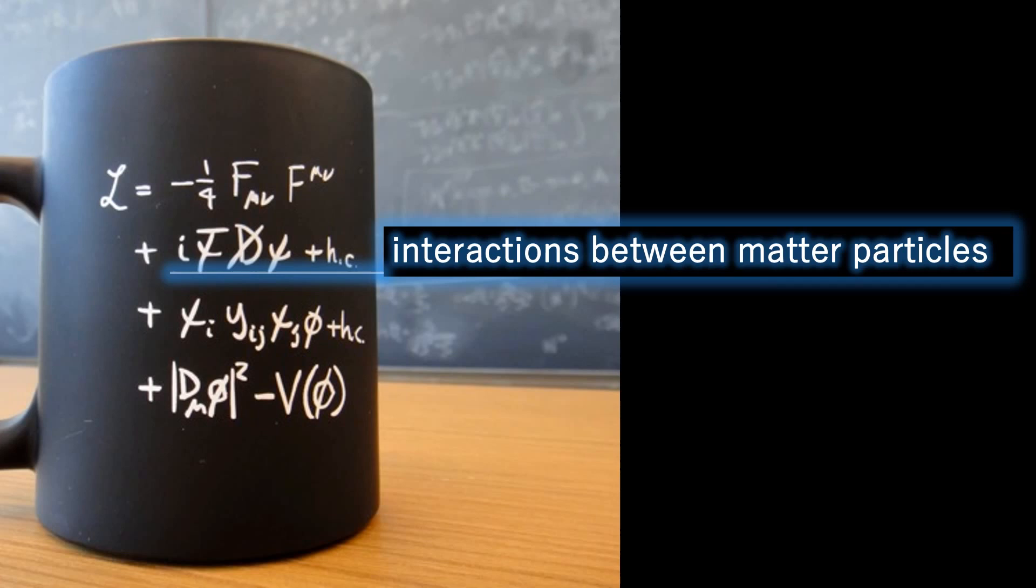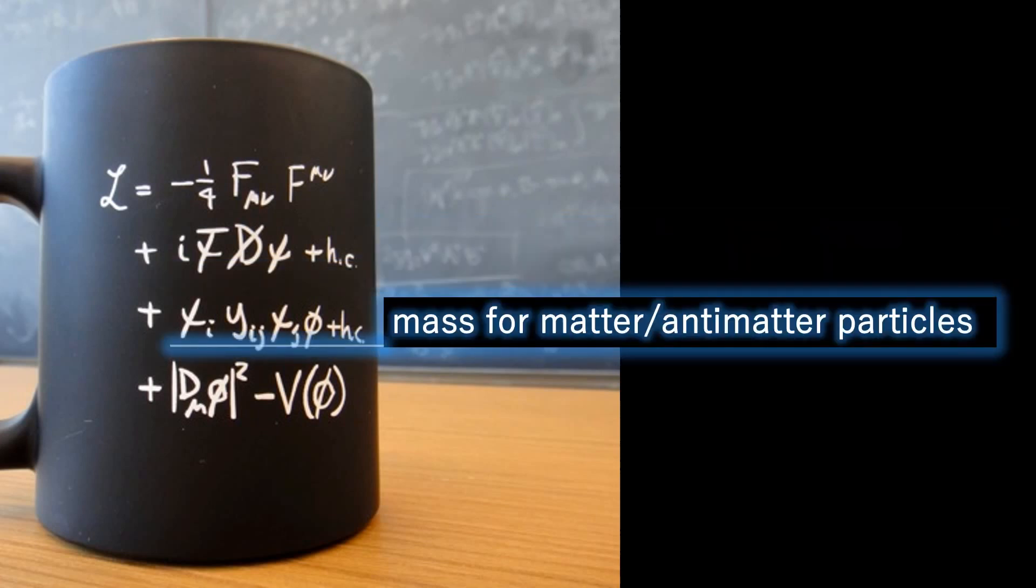This second term of the Lagrangian is of special importance for our everyday life, apart from gravity. This term describes how matter particles couple to the Brout-Engler-Higgs field phi and thereby obtain mass. The entries of the Yukawa matrix Yij represent the coupling parameters to the BEH field and hence are directly related to the mass of the particle in question.